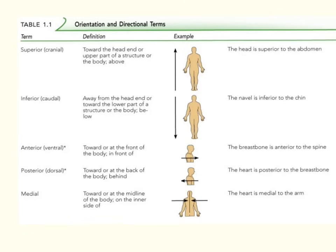Anterior means toward the front of the body. For example, the breastbone or sternum is anterior to the spinal cord, which is in the back. Posterior means away from the body or behind — so the heart is posterior to, or behind, the breastbone or sternum. We can also use ventral and dorsal for these terms: the sternum is ventral to the spinal cord, where ventral means belly side, and the heart is dorsal to the sternum, where dorsal means back side.